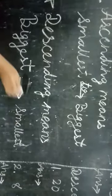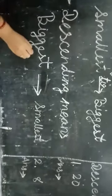descending means biggest to smallest. Students, first we can write the biggest number then go to the smallest number. Now give us some example, look here.